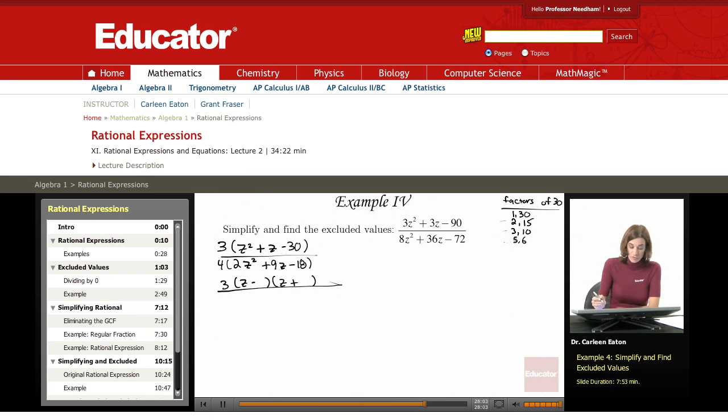So if I have a negative 5 and a positive 6, and I add those together, negative 5 plus 6 equals 1, which is the middle term. So the correct factorization of this would be that I have z minus 5, z plus 6.